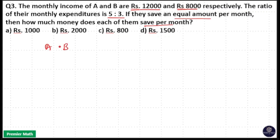So we have A and B here. Their income is 12,000 and 8,000 respectively.